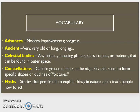'Celestial bodies' are any objects — including planets, stars, comets, or meteors — that can be found in outer space. 'Constellations' are certain groups of stars in the night sky that seem to form specific shapes or outlines of pictures. And 'myths' are stories that people tell to explain things in nature or to teach people how to act.